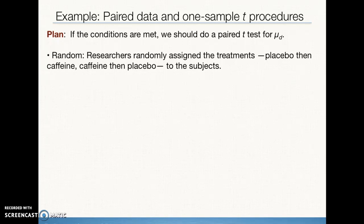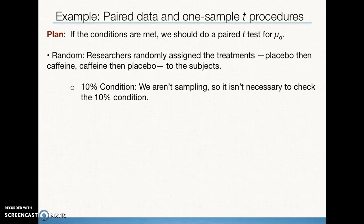We start with random. Researchers randomly assign the treatments placebo, then caffeine, or caffeine, then placebo to the subjects. This is an example of a randomized experiment, not random selection of subjects. Randomized experiment. The 10% condition, we aren't actually sampling, so it is not necessary for us to check the 10% condition for use of the standard deviation equation that we're going to be plugging into our test statistic equation.